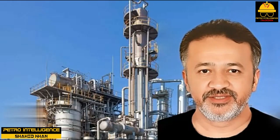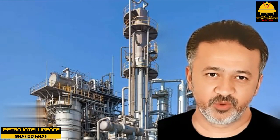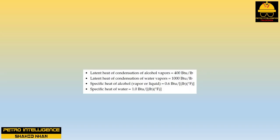For heat balance calculations, if you have listened to my previous lectures and understood what you have heard, you will readily understand the following calculation. It is simply a repetition with numbers of the discussion previously presented. You will require the following values: latent heat of condensation of alcohol vapors = 400 BTU/lb; latent heat of condensation of water vapors = 1000 BTU/lb.